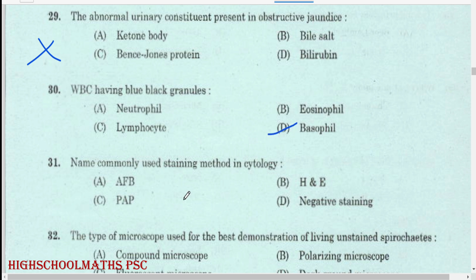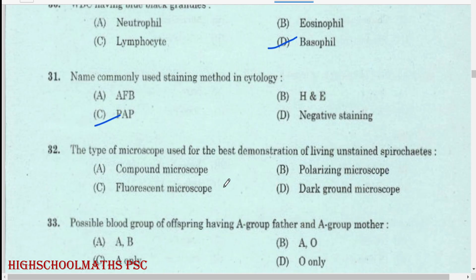Name the commonly used staining method in cytology: PAP staining method. The type of microscope used for the best demonstration of living unstained spirochetes: dark ground microscope.